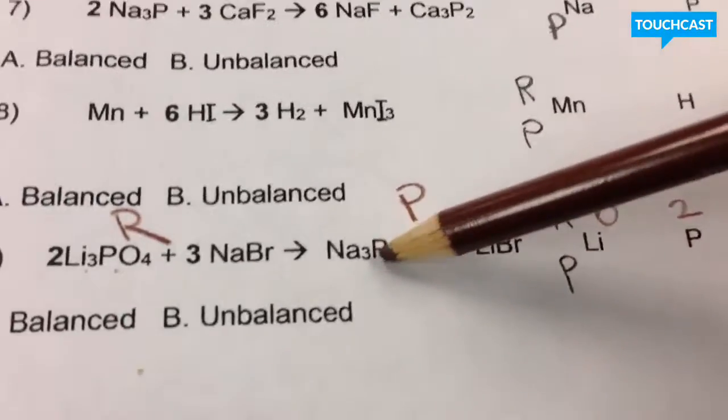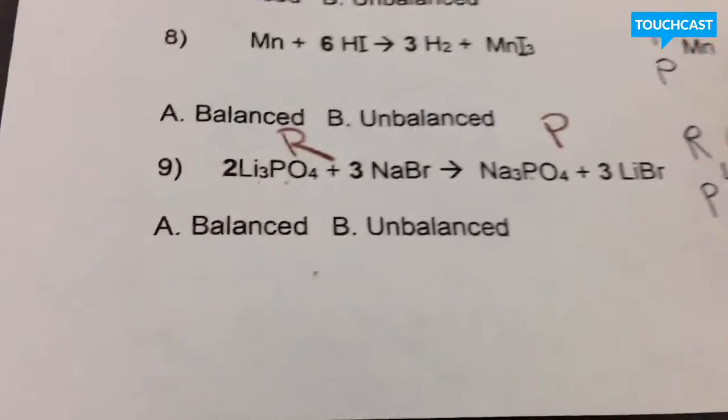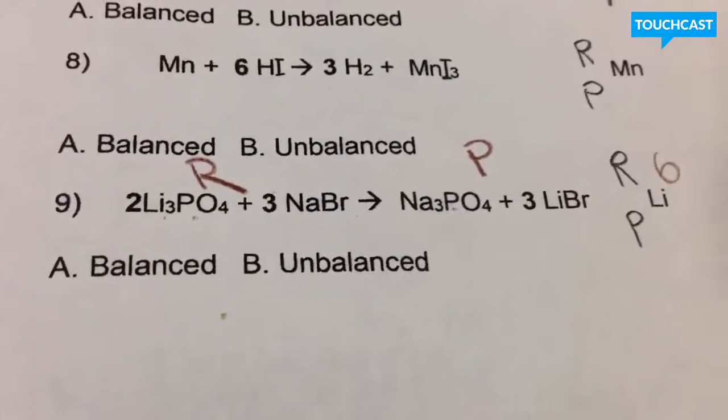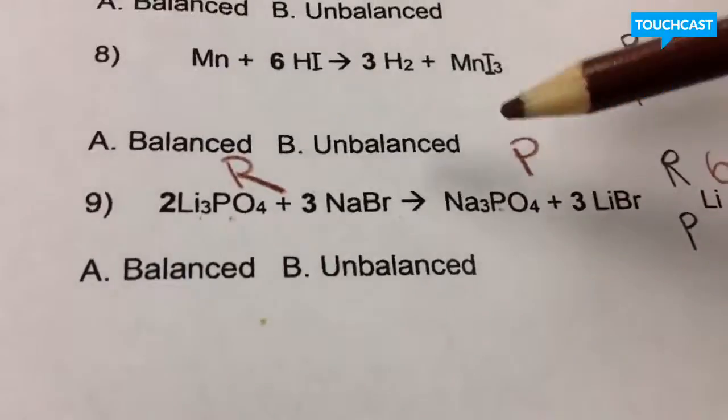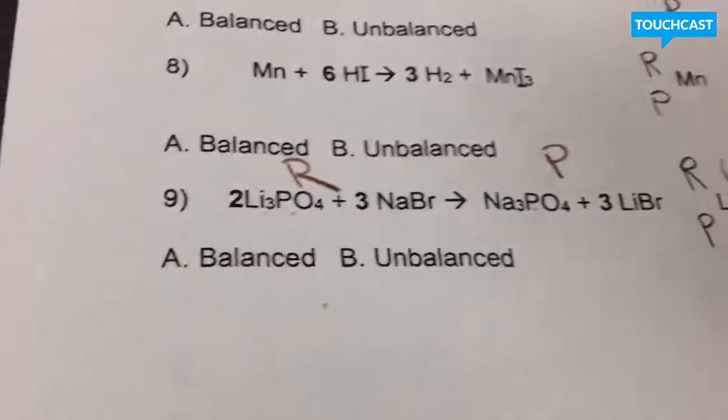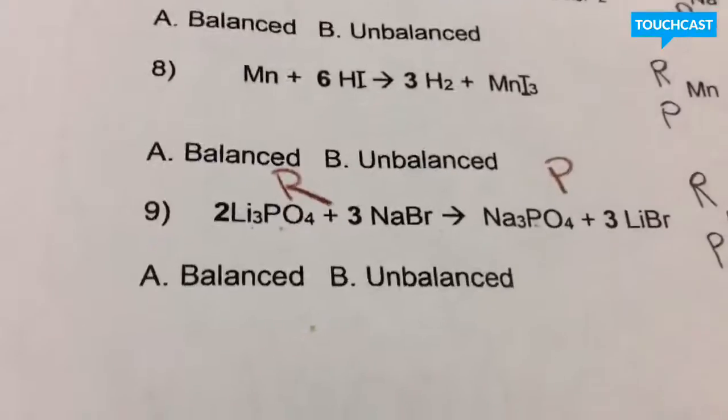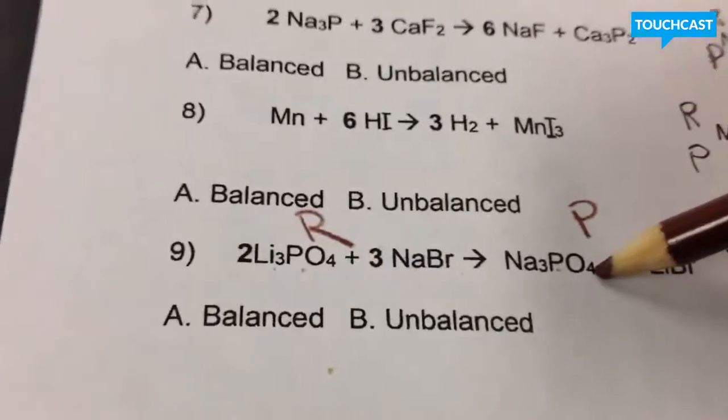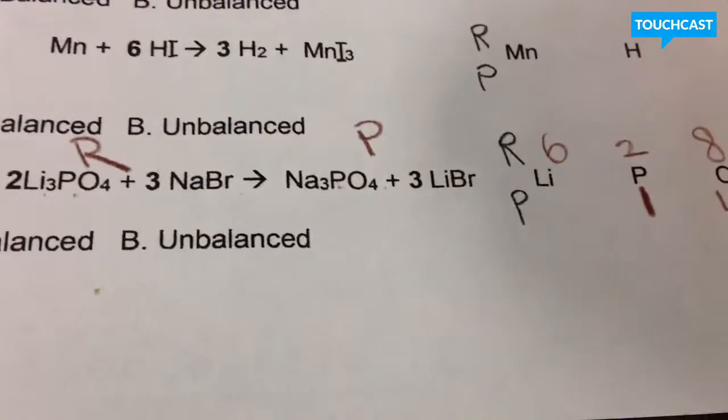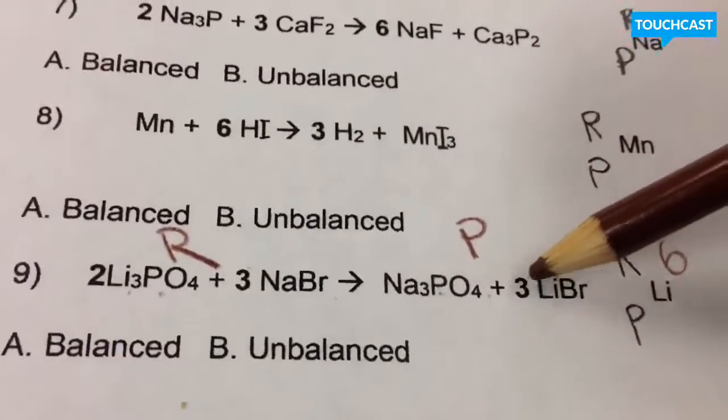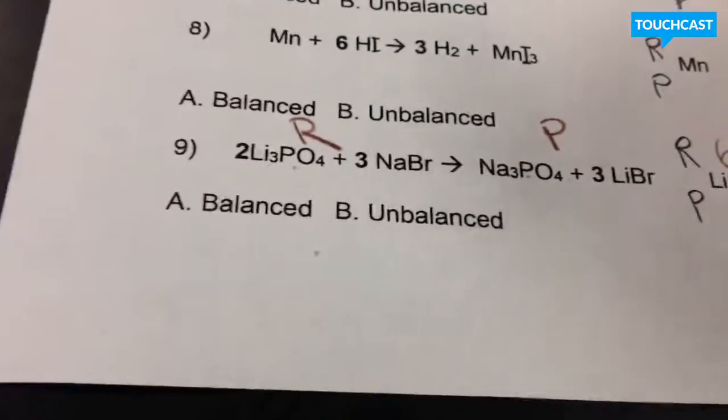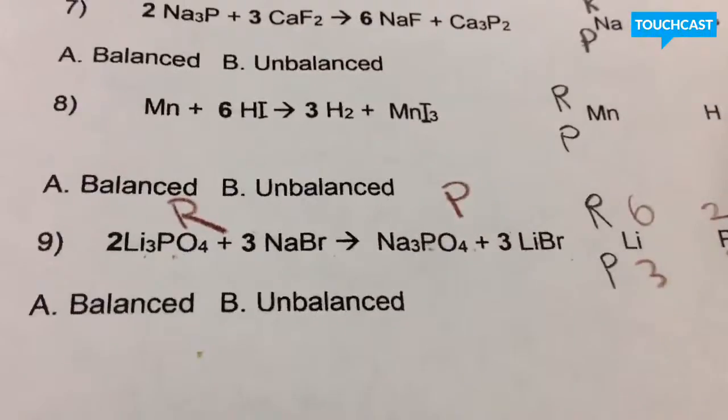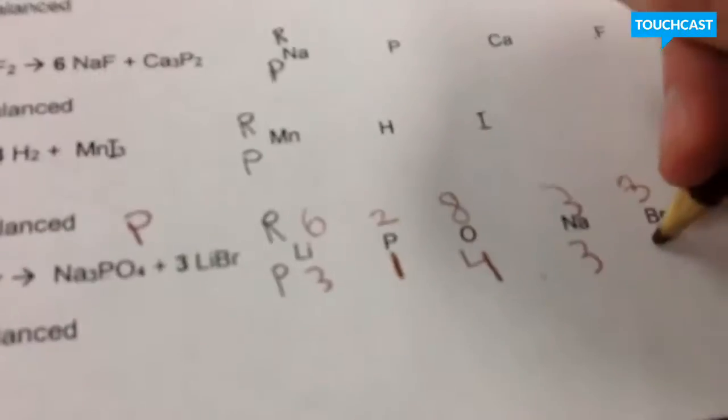Now, let's skip over to our products. You have basically three sodiums. No number right there would mean you would have one phosphorous. Basically, that four would mean you would have four oxygens. This three would multiply across for both of these since there's no number. So you'd have three lithiums. And you would have three bromides.